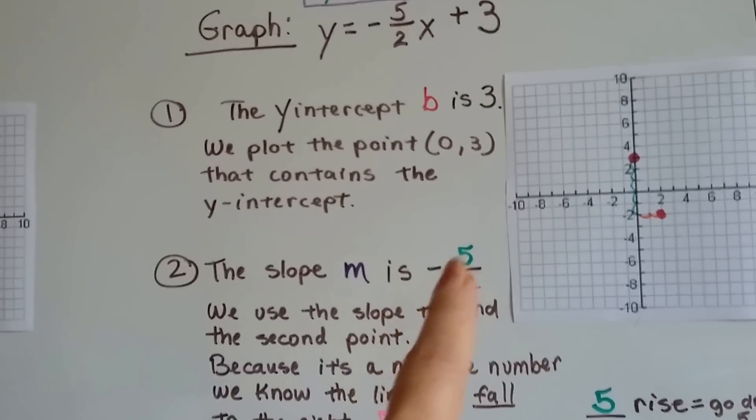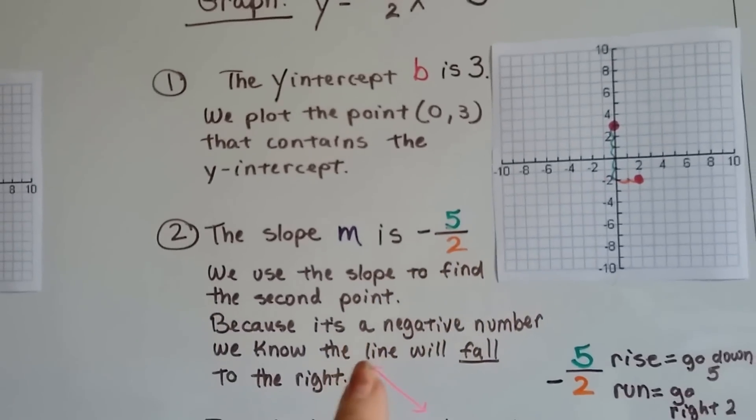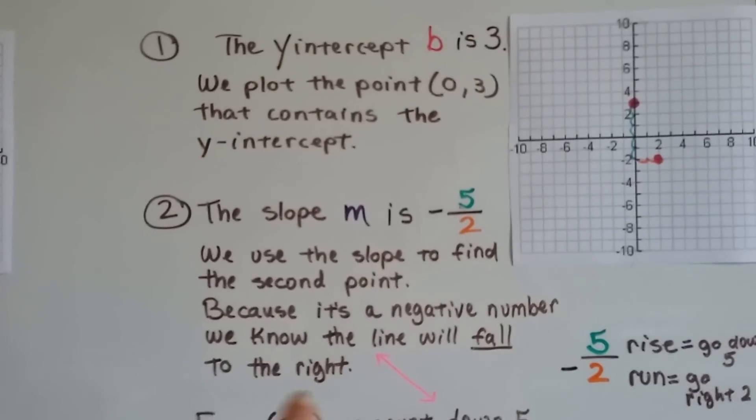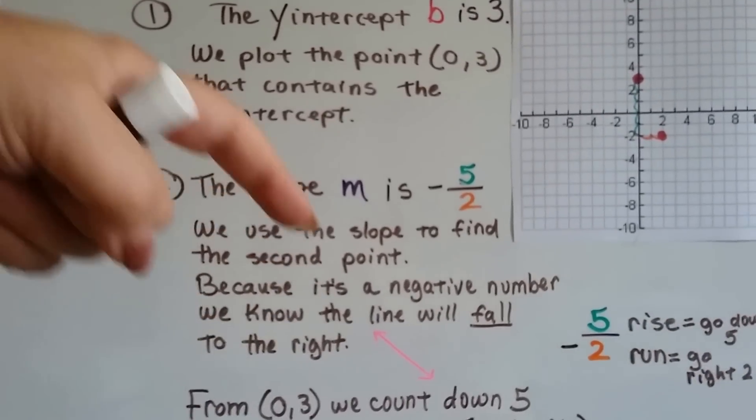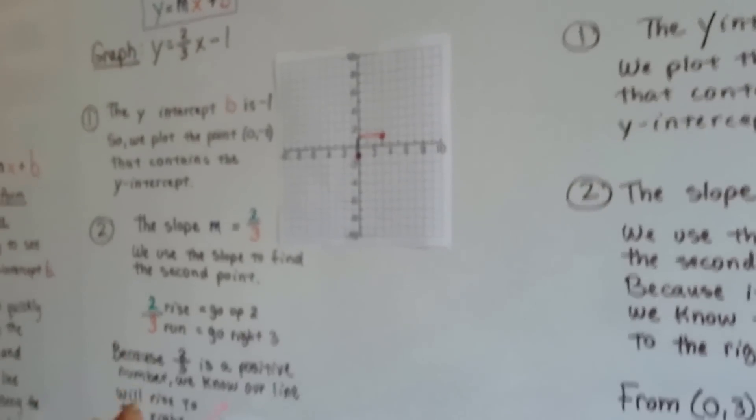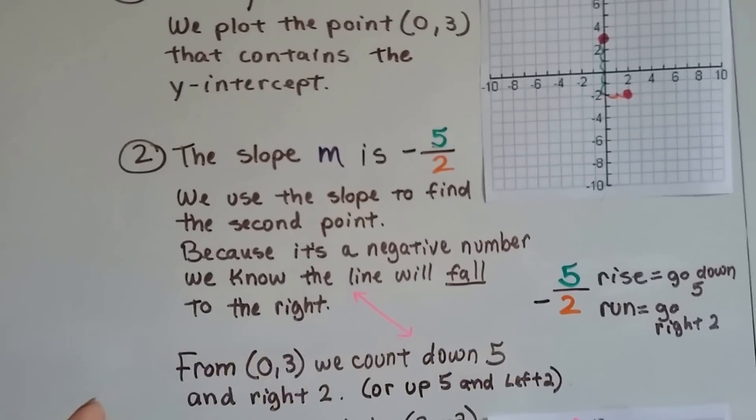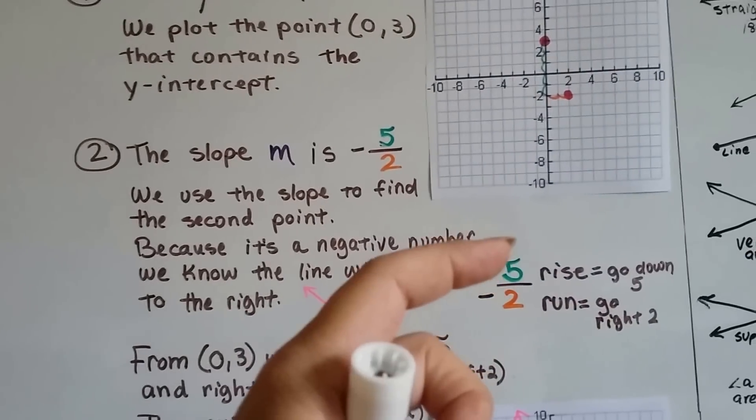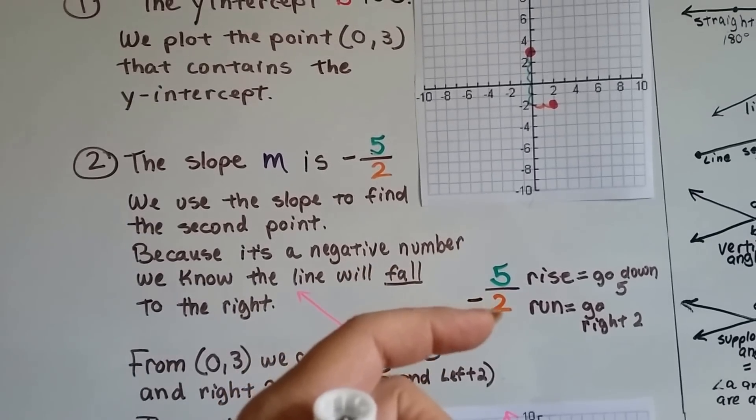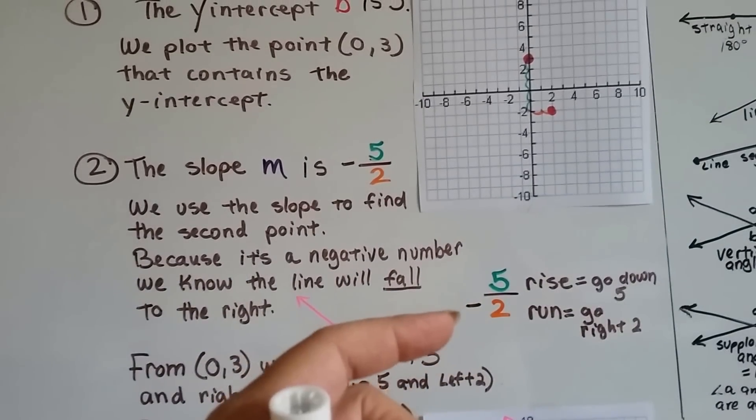We know our slope is a negative 5 over 2, and we use that slope to find the second point. And because it's a negative number, we know the line is going to fall to the right. This one, it was positive, so we knew it was going to go up. Now that this is a negative one, we know the line is going to go this way. And we've got the 5 as the rise and the 2 as the run, and it's negative.